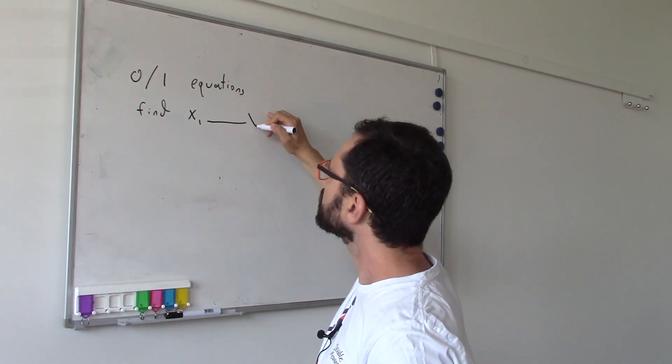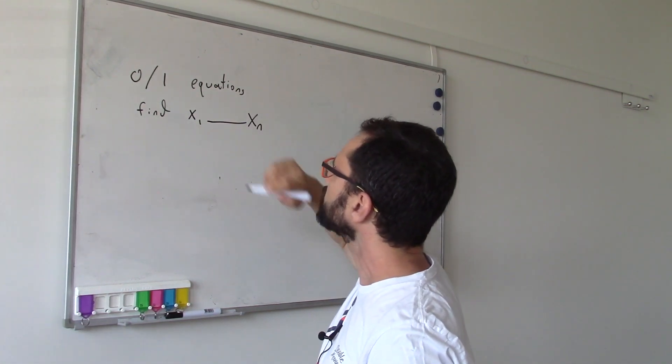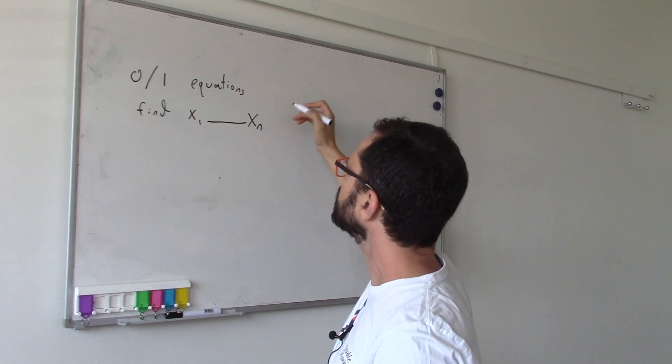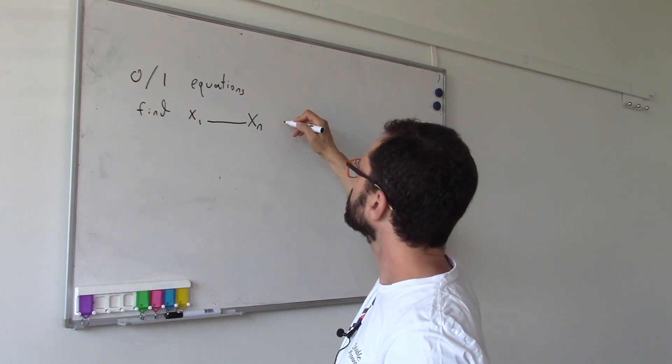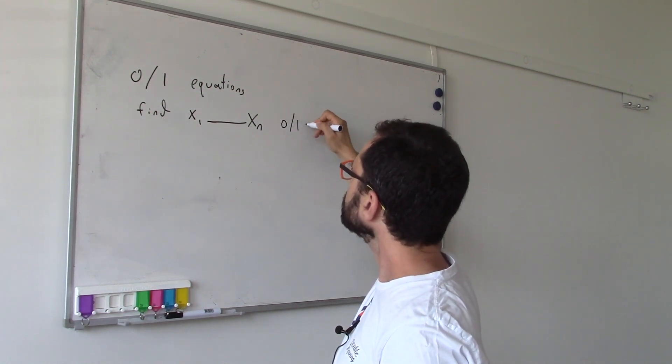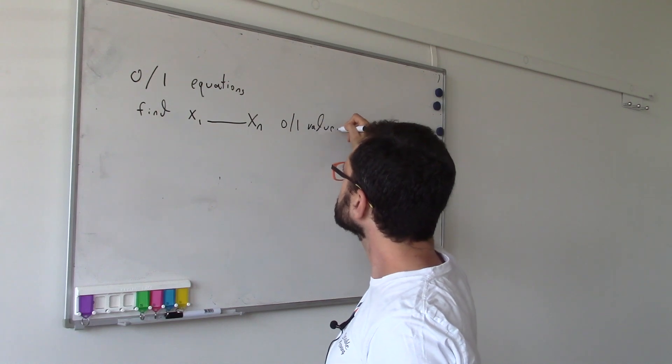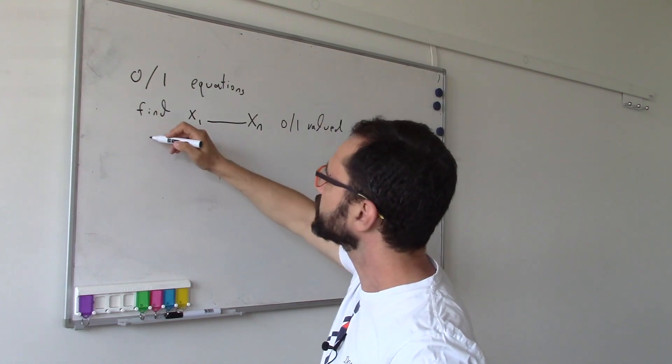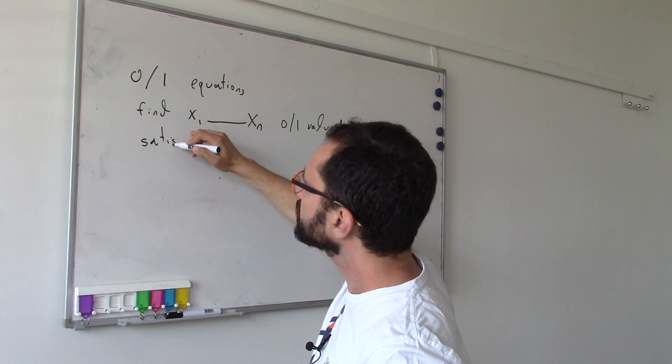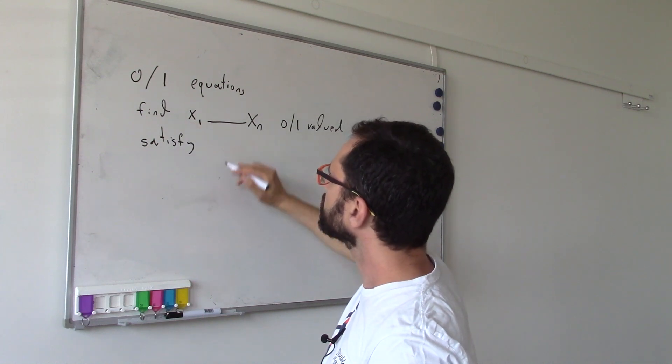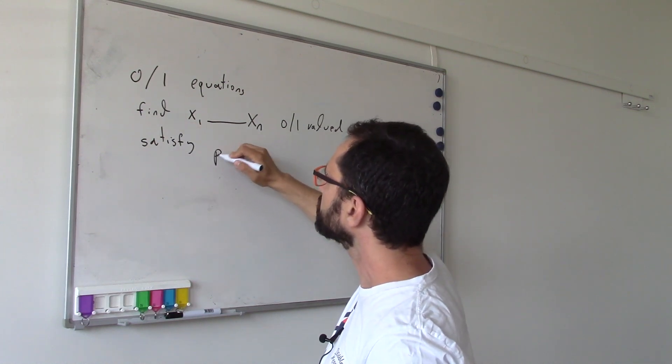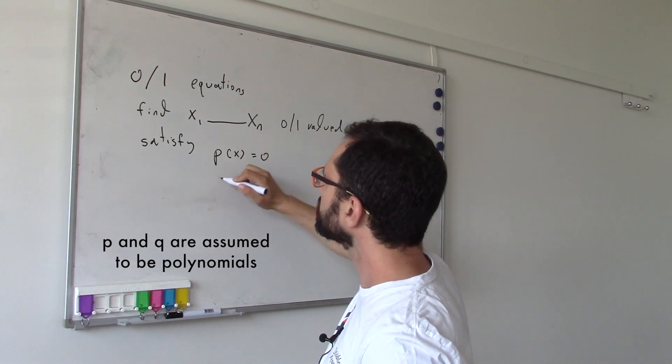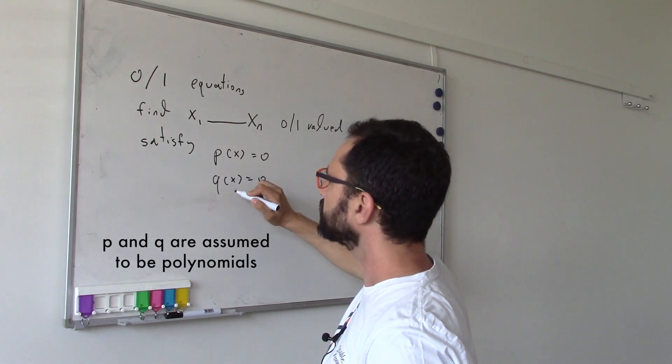We want to find some x - you have some variables x1 through xn - that are zero-one valued, that satisfy some conditions. For example, they satisfy p(x) = 0 and q(x) = 0, etc. It turns out that such systems of equations have a huge variety of applications.